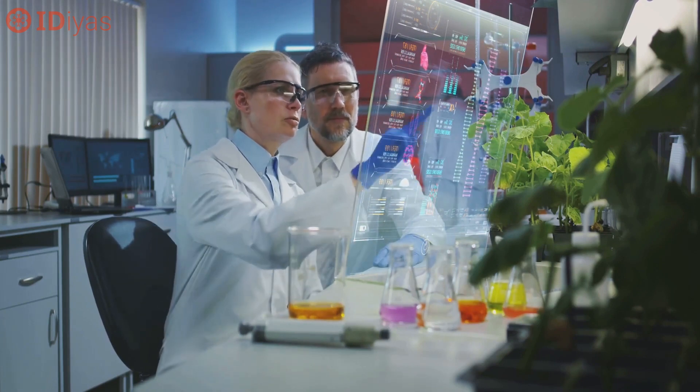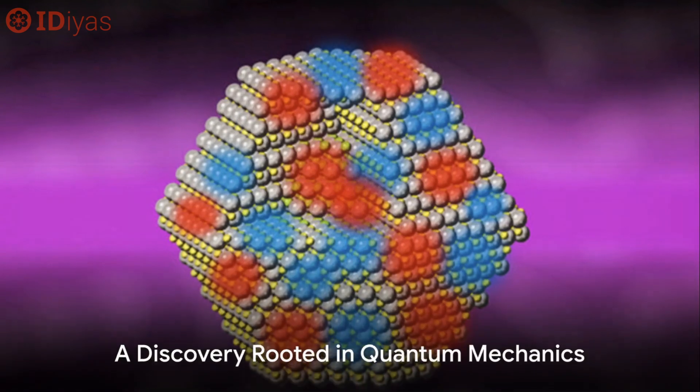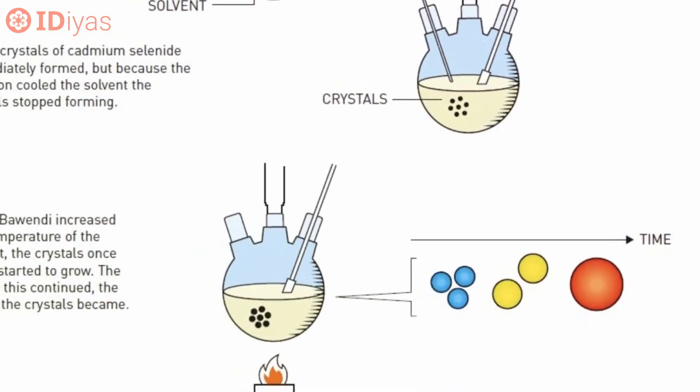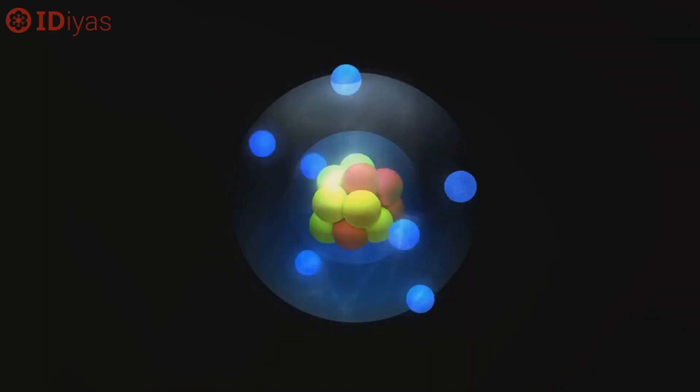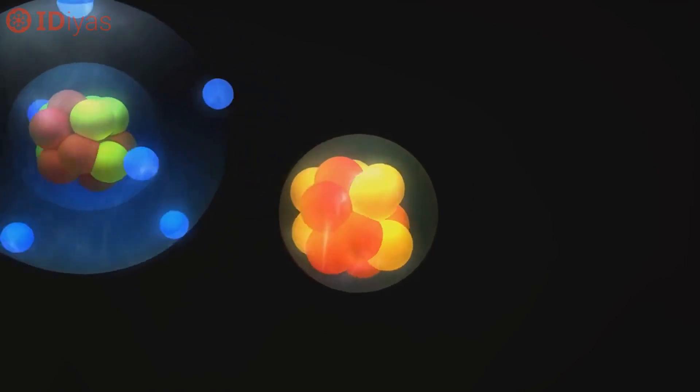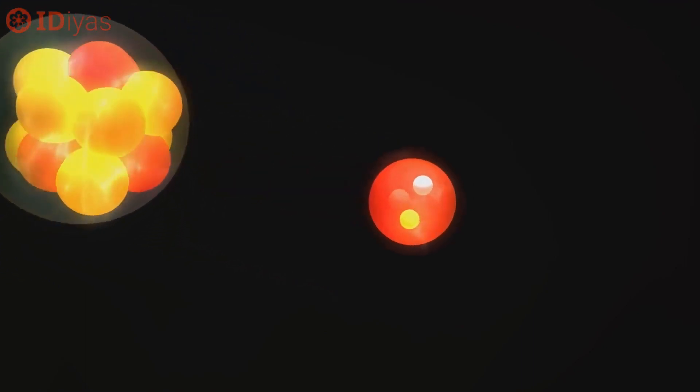But what exactly are quantum dots? The story of quantum dots begins with a curious observation in colored glass. In the early 80s, physicist Alexei Ekimov was studying colored glass when he noticed something fascinating. The size of copper chloride crystals formed within the glass influenced its color, a phenomenon he realized was rooted in the mysterious world of quantum mechanics.